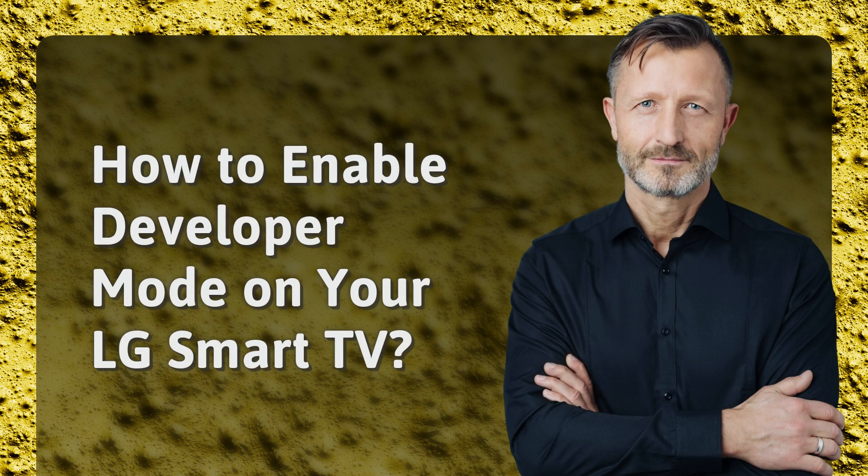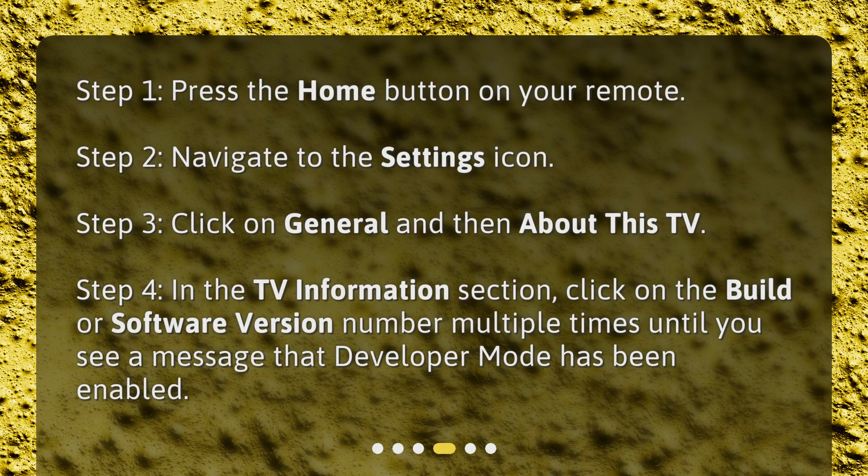How to enable developer mode on your LG Smart TV. Step 1: Press the Home button on your remote. Step 2: Navigate to the Settings icon. Step 3: Click on General and then About this TV.